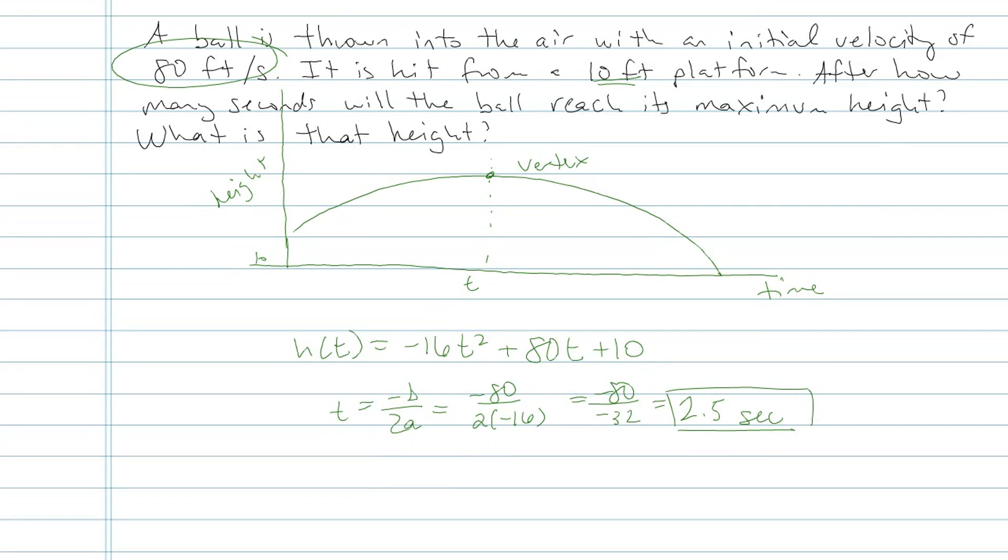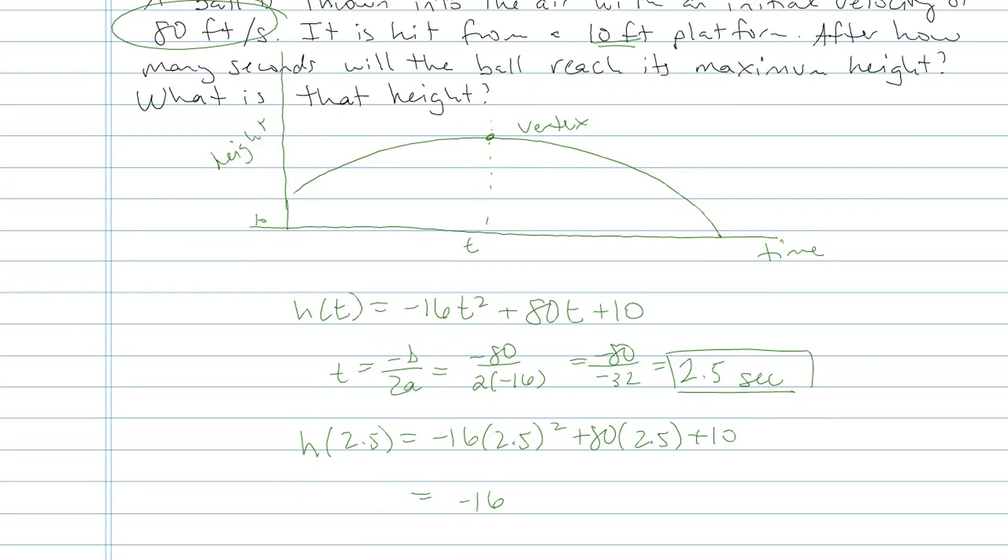What is that height? That's what we have to figure out next. Well, we know after 2.5 seconds it gets as high as it's going to get. We have to figure out now how high is it. So what I need to do then to find that height for 2.5 seconds is plug in 2.5 for t. 2.5 squared plus 80 times 2.5 plus 10. So go ahead and grab your calculator. Now being careful with order of operations, the first thing I have to do is 2.5 squared. So that's 6.25. A lot of students will on accident try to type that in all at once and your calculator will mess up that order of operations stuff.